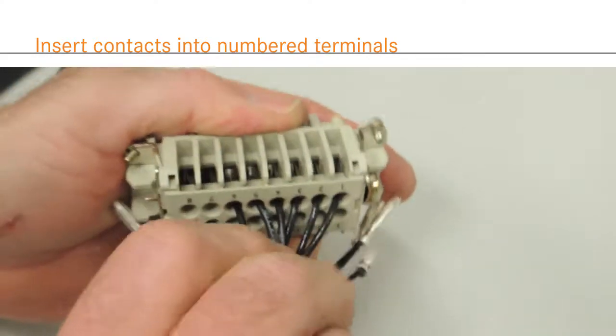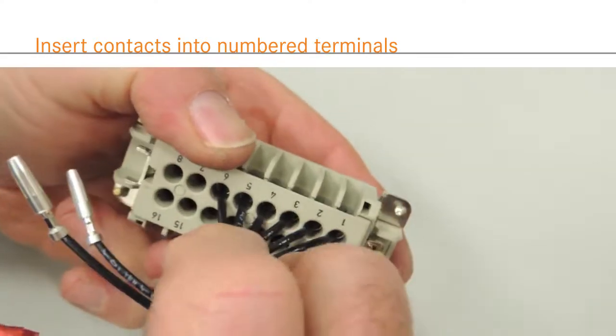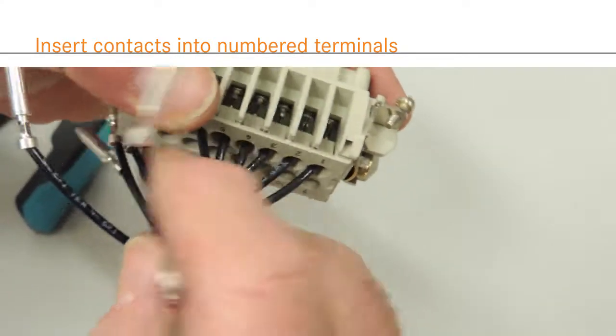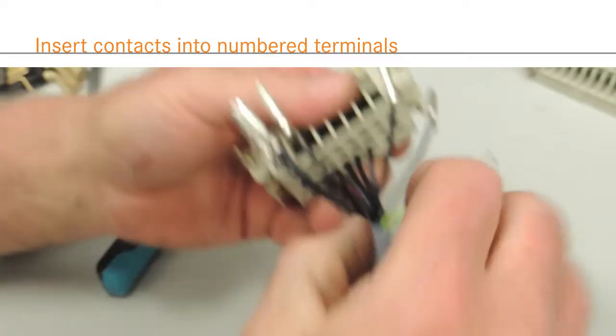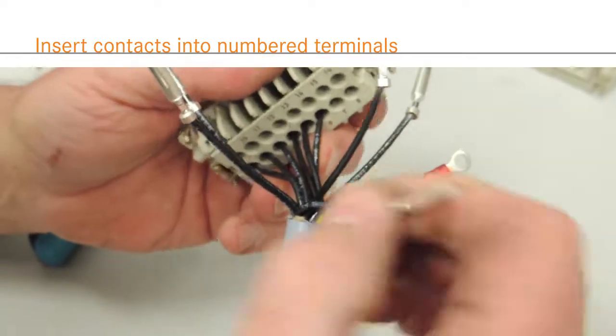To wire a crimp terminated insert, simply insert the terminated conductor into the correctly numbered wire terminal and push the contact into place. Both conductors and terminals are sequentially numbered for consistent wiring.